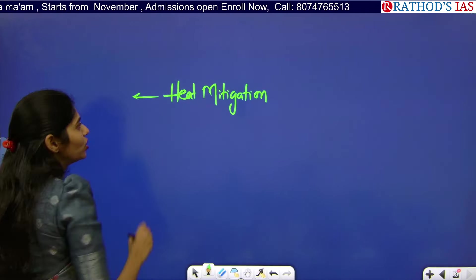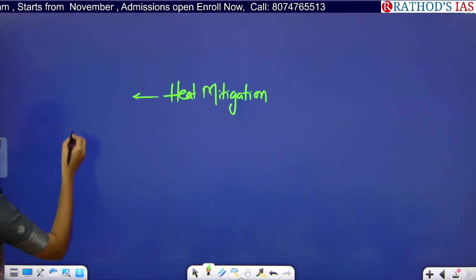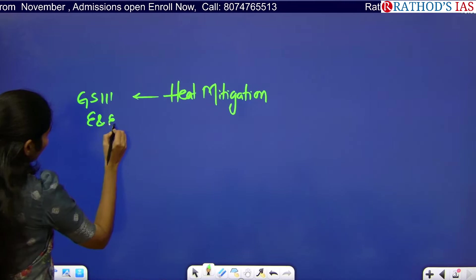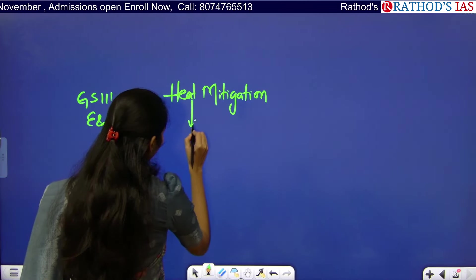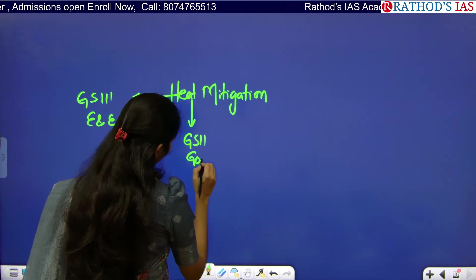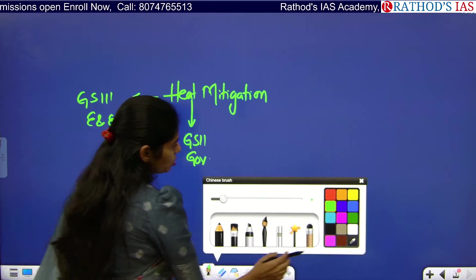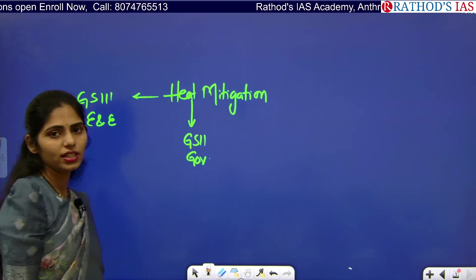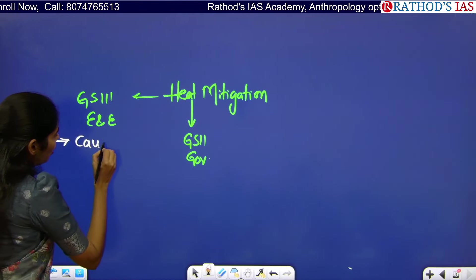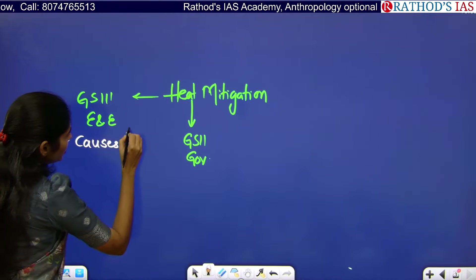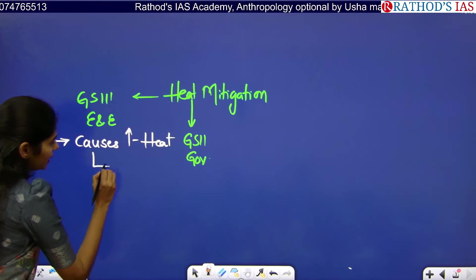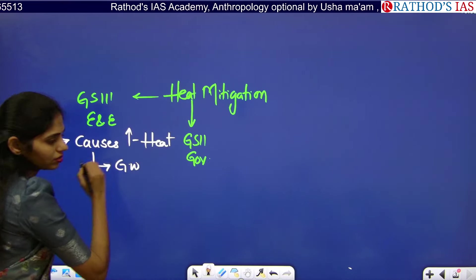From which subject will you deal with this topic? From GS Paper 3 under Environment and Ecology, and even from GS Paper 2 under Governance. From Environment and Ecology, you need to see what are the causes for increasing heat — can we connect this topic with global warming? Yes.